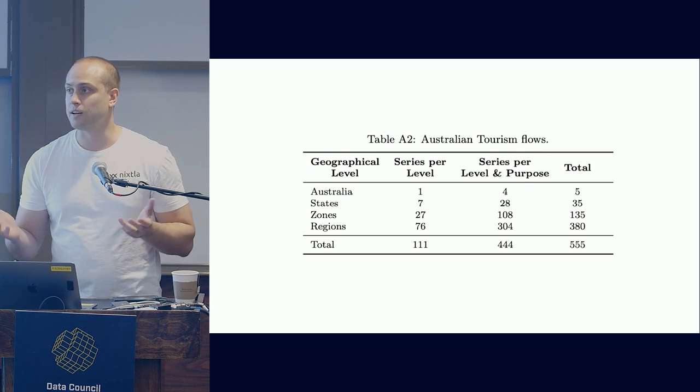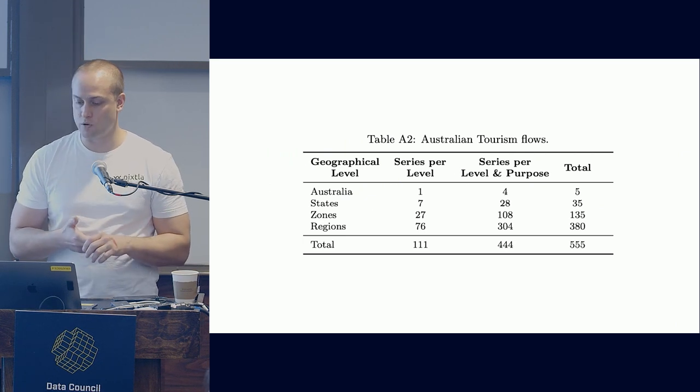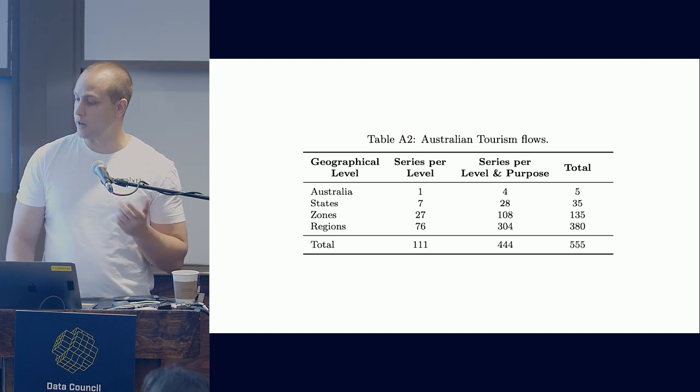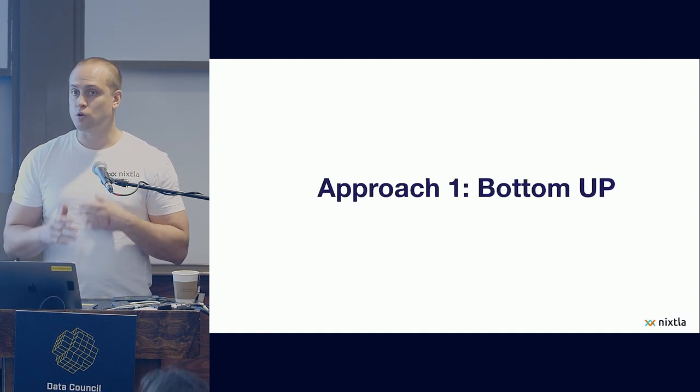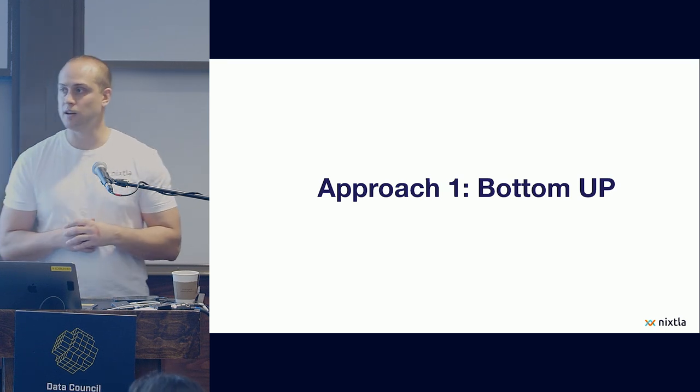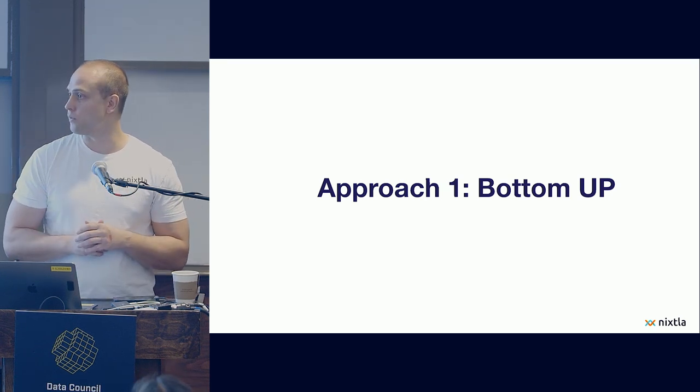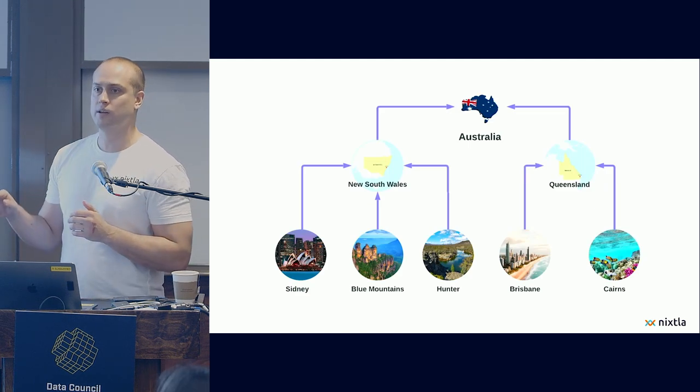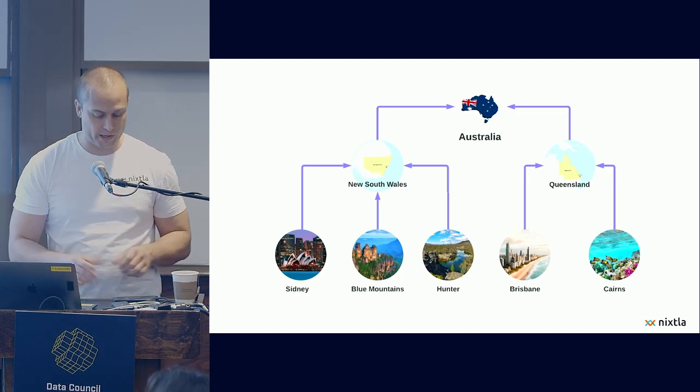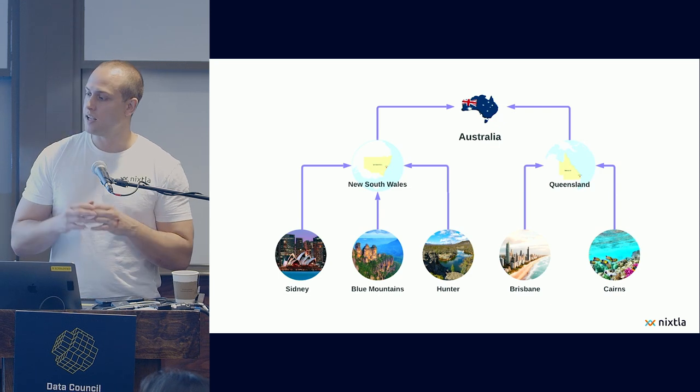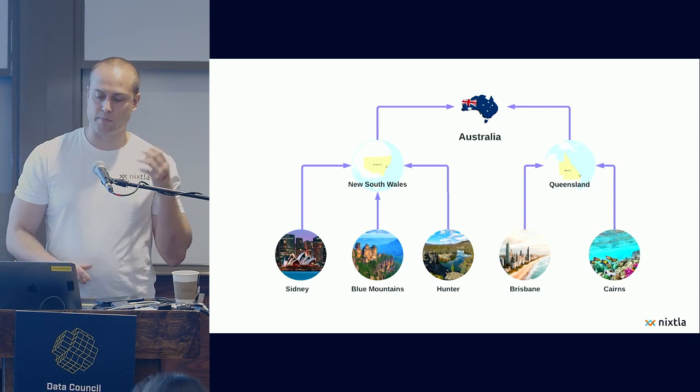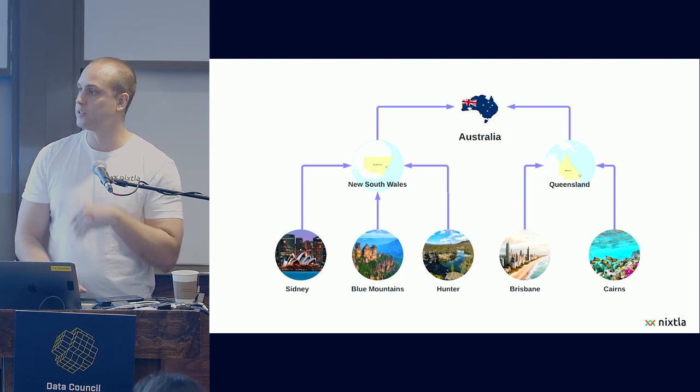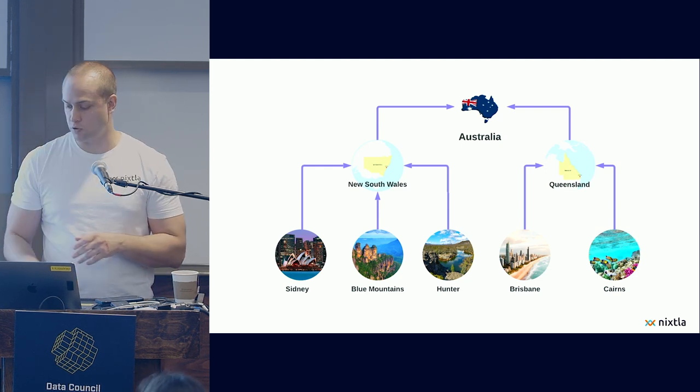This is a classical hierarchical problem where you have in total 555 series that are divided by the different levels in the hierarchy. So what would you do as working for that office? One thing that you could do is try to predict at the lowest granularity, what we called fine-grained forecasts, and then add them up. So, for example, you would forecast Sydney, Blue Mountains, Hunter, and then add them up to New South Wales, and then to the total of Australia.